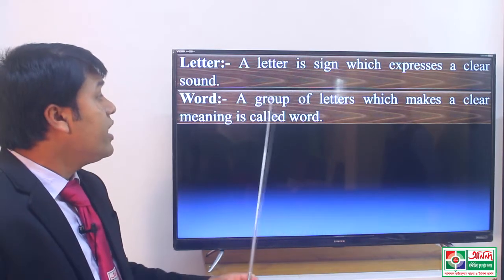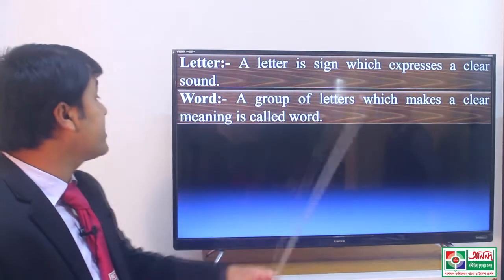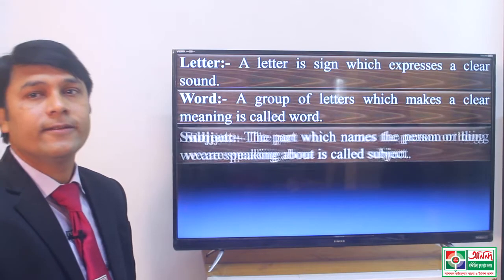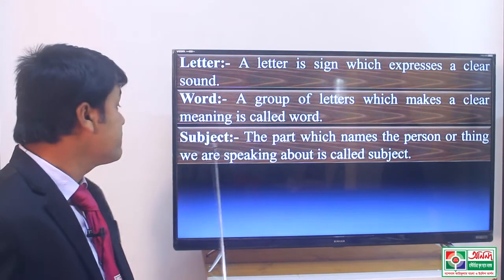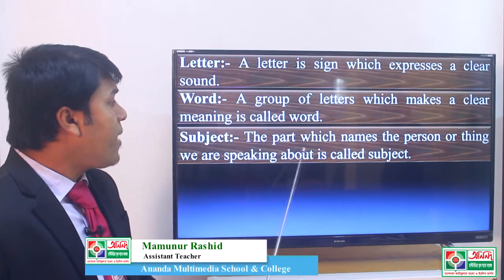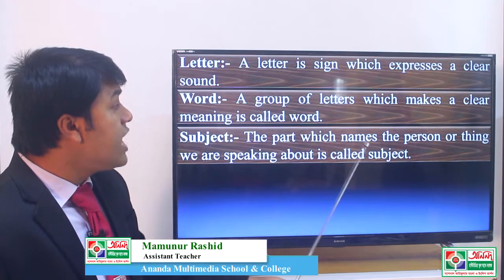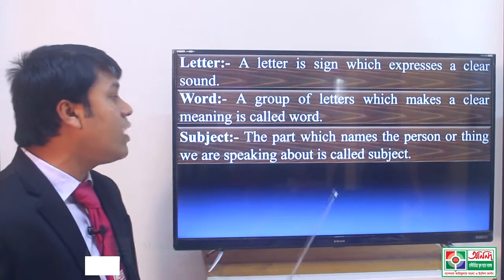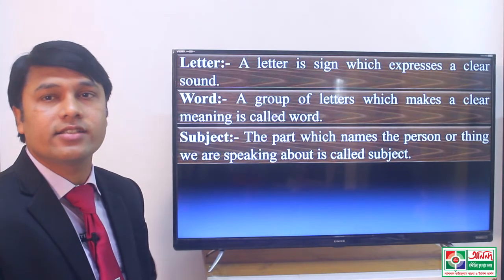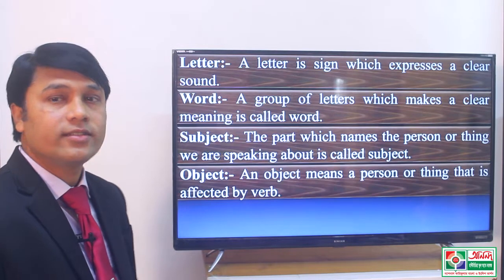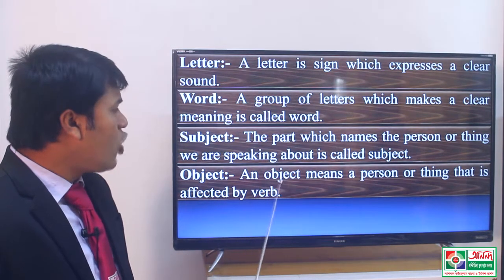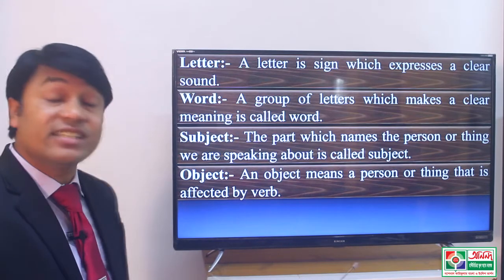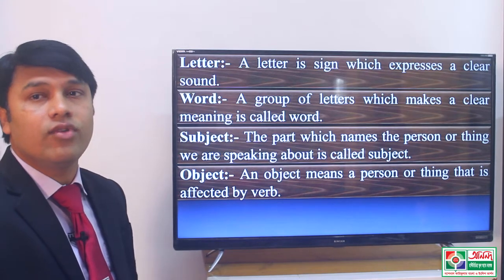Word. A group of letters which makes a clear meaning is called a word. Subject. The part which names the person or thing we are speaking about is called subject. Object. An object means a person or thing that is affected by a verb.